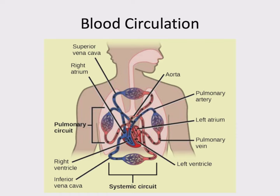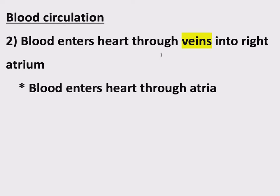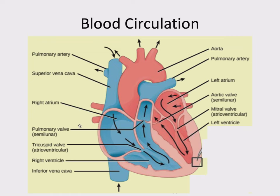This deoxygenated blood needs to get oxygen so it can do this whole process again, but there are going to be a few steps before we can do this. Step number two: blood enters the heart through veins. A vein is defined in the key terms as a blood vessel that brings blood back to the heart. So if it's traveling toward the heart, it's traveling in a vein. Blood enters the heart through veins into the right atrium — this is the first of four chambers.